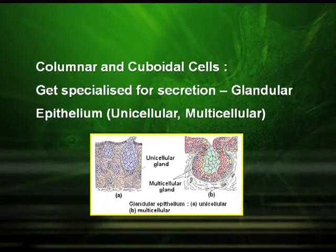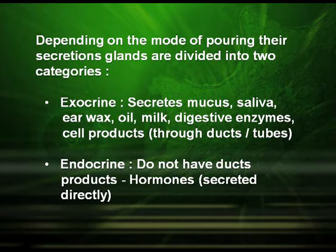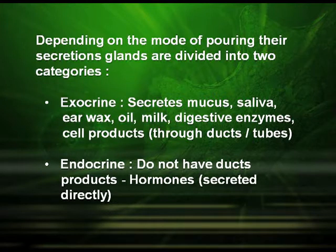Columnar and cuboidal cells get specialized and act as glandular epithelium, which may be unicellular or multicellular. Depending on the mode of pouring their secretions, they are divided into two categories: exocrine glands, which secrete mucus, saliva, and earwax through ducts, and endocrine glands, which do not have ducts and whose products are called hormones, secreted directly into the bloodstream.